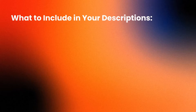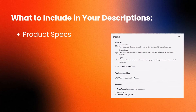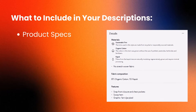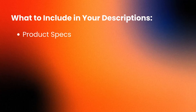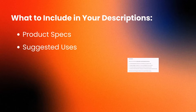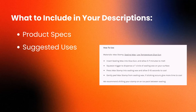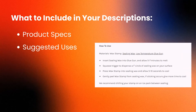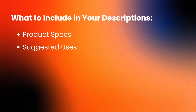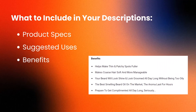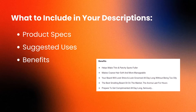See what to include in your descriptions. Product specs: list essential details like size, material, weight, and anything relevant to your product. Suggested uses: show customers how your product can be integrated into their daily lives. Benefits: highlight the advantages your product offers and the problems it solves.